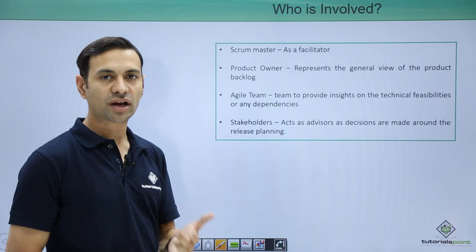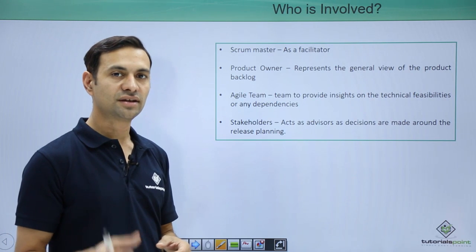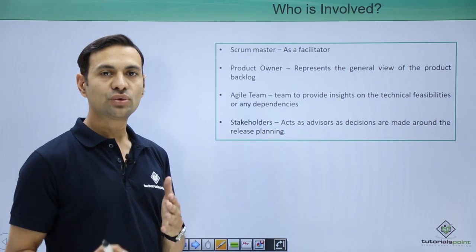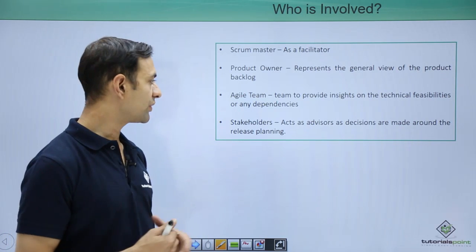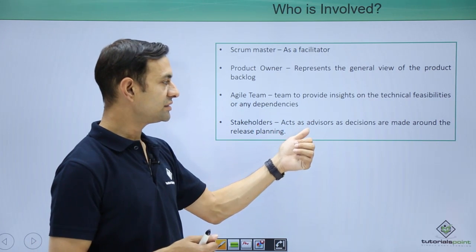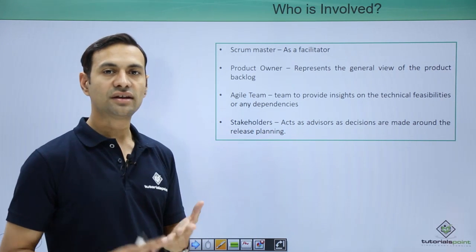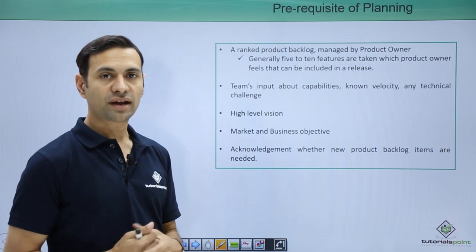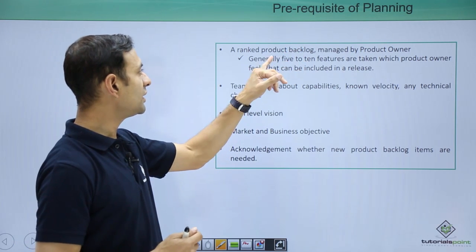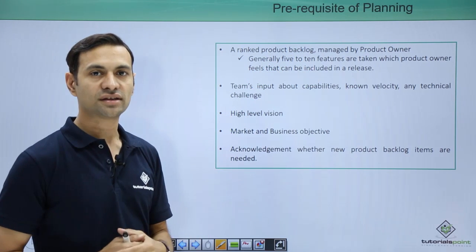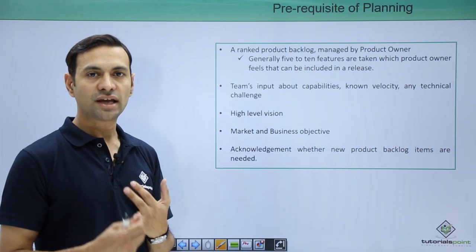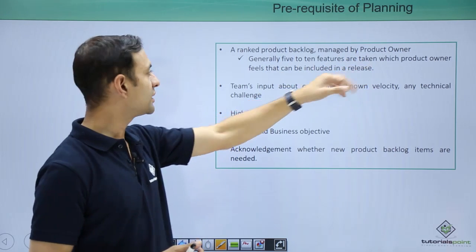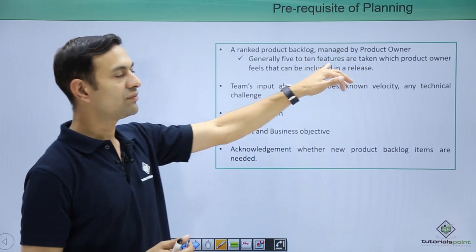Dependencies are features that cannot be developed without a particular dependency being completed first. Stakeholders are advisors whose decisions can influence a particular functionality to be developed, so stakeholders act as advisors so that decisions are made around the release planning. Now let us see the prerequisites of planning. The product backlog should be ranked properly — ranking means identifying which is a high priority feature and which is a low priority feature. Once this ranking is done, which is managed by the product owner, you normally have 5 to 10 features which can be included in a release.